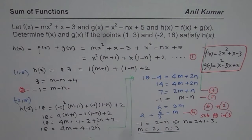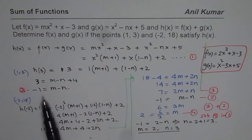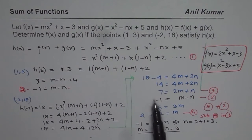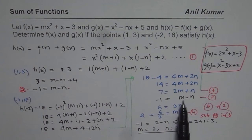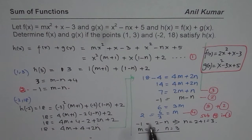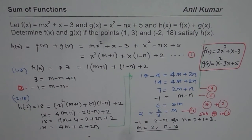To summarize the steps: first, find the equation of h of x by combining the given functions. Then use the two points to get two equations: m minus n equals minus 1, and 2m plus n equals 7. From these two equations, combine them, isolate one variable, and find both variables. After substituting the values, we have the functions. I hope that's absolutely clear. Thank you and all the best.